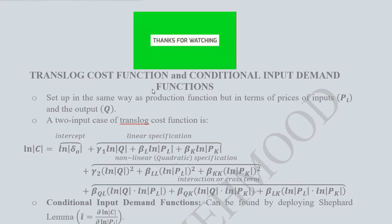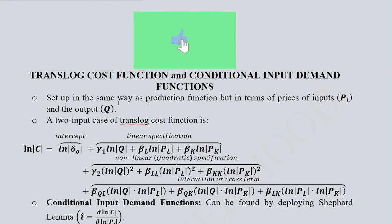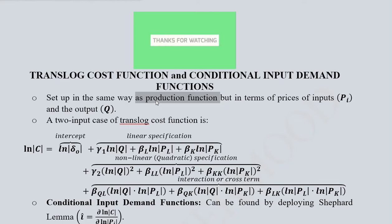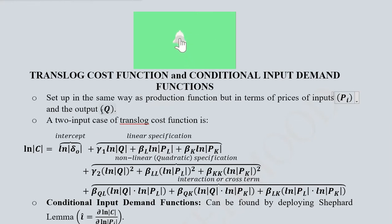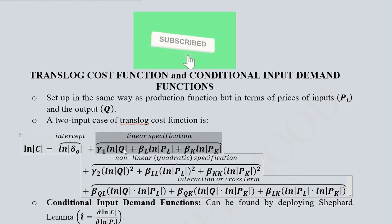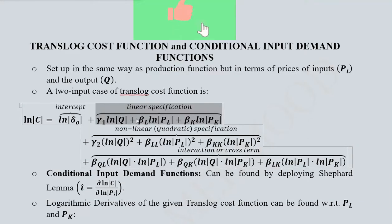Now let's come to the topic: the cost function in the translog version. Just like the production function, we are going to view the cost function, but here there is a slight change — instead of inputs we are going to use their prices, and we are also going to use output as an independent variable. In the two-input case of the translog cost function, this is the natural log of cost, and we have an intercept plus a linear specification with output and the prices of the inputs.